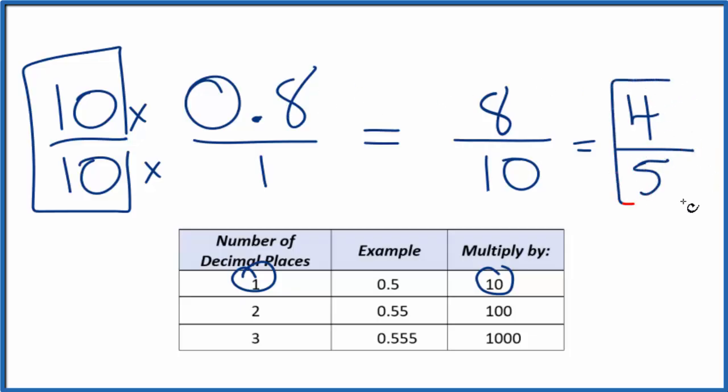And 0.8, that is equal to 4 fifths. The fraction 4 fifths. If you divide 4 by 5, you will get 0.8.